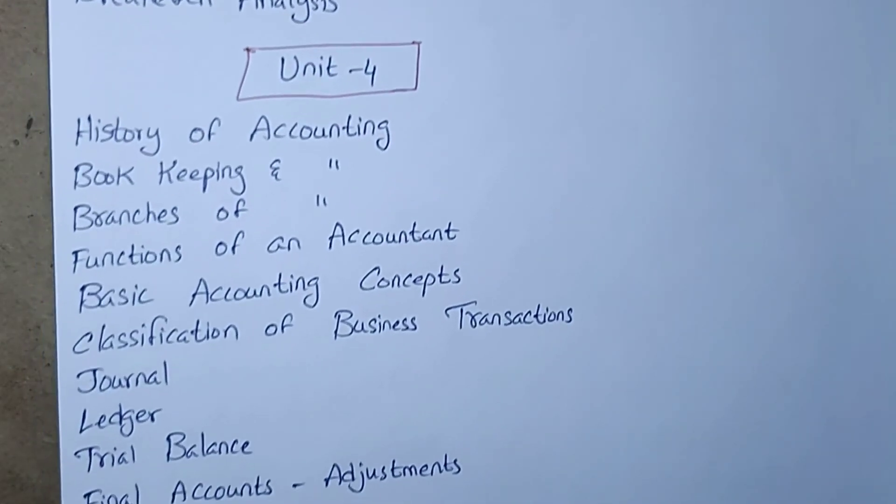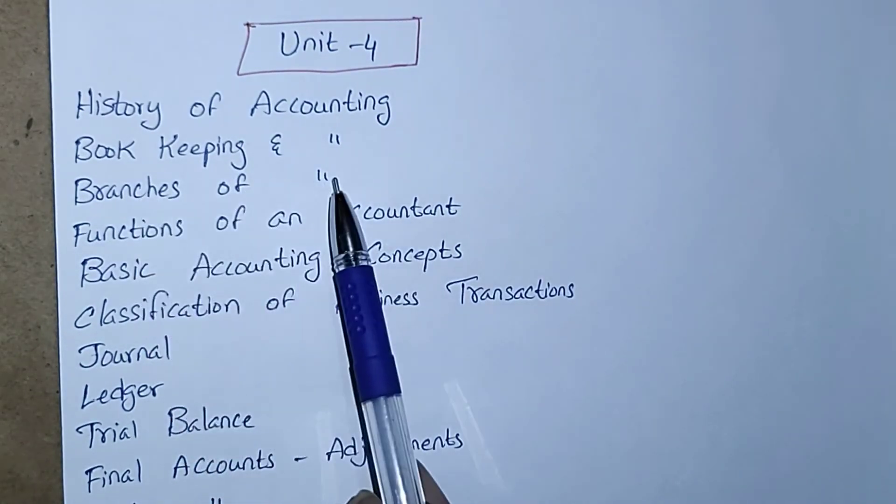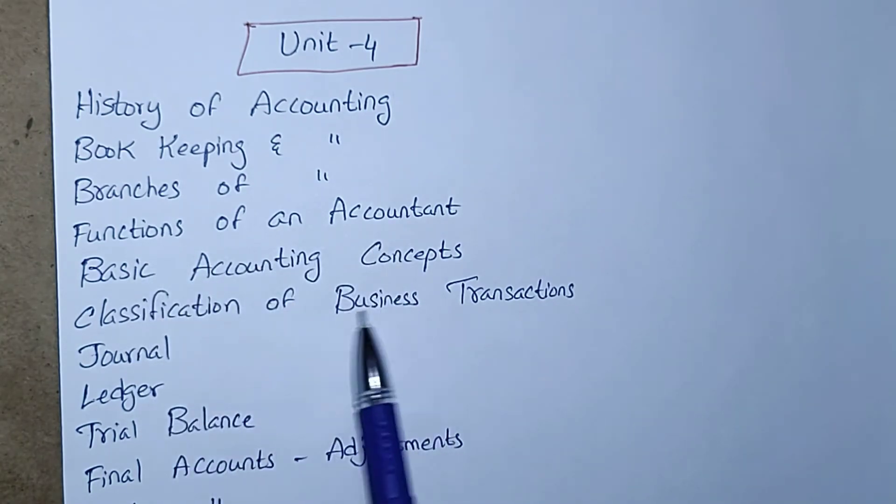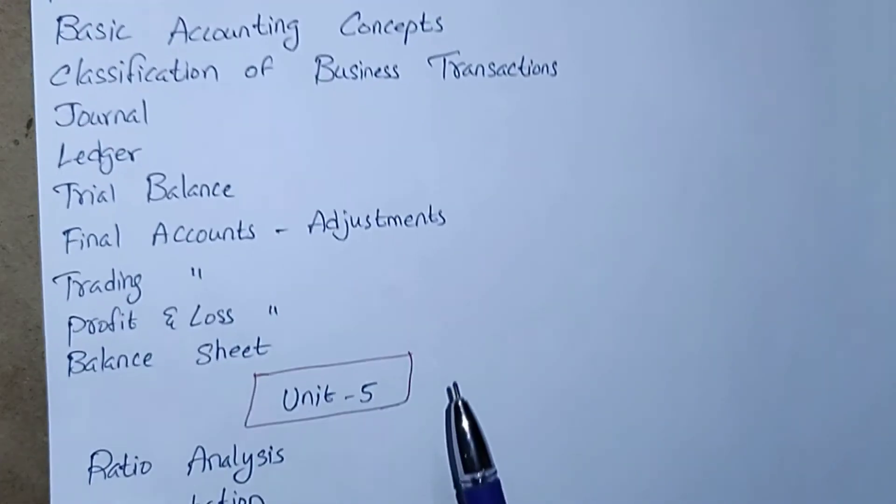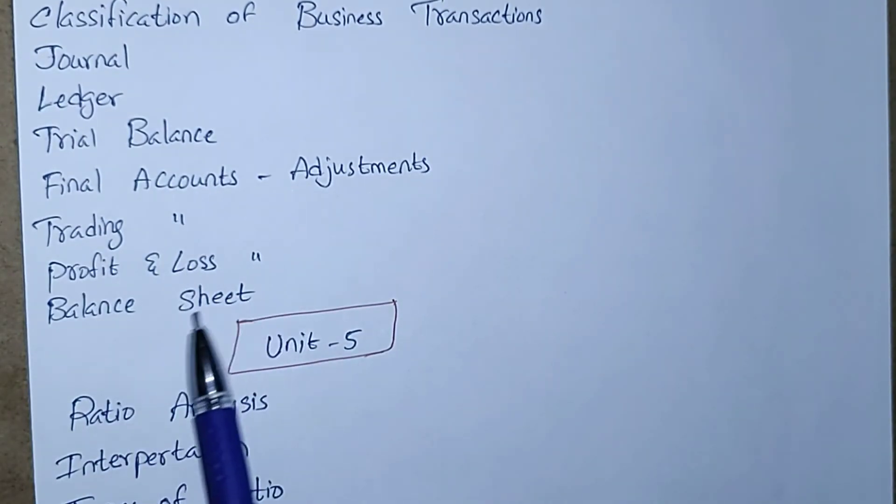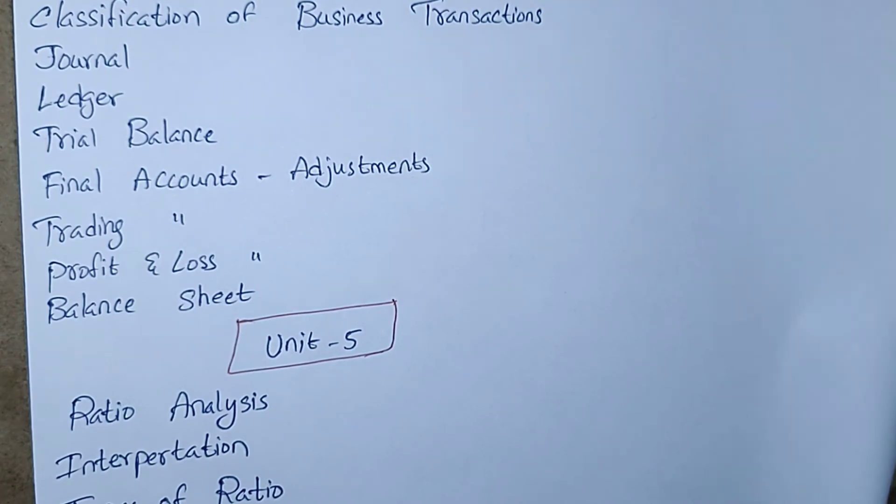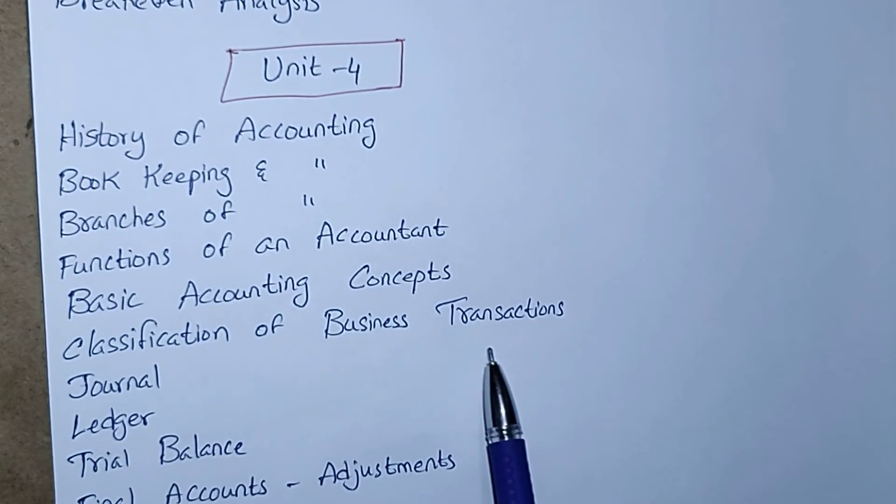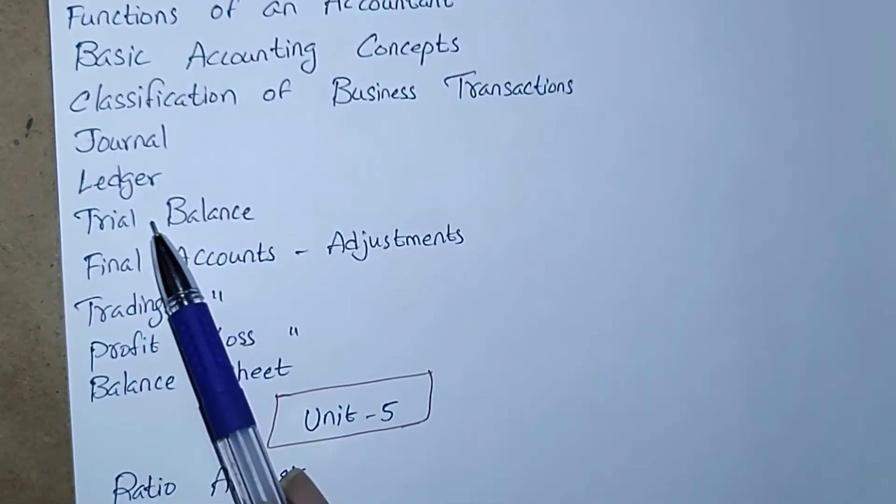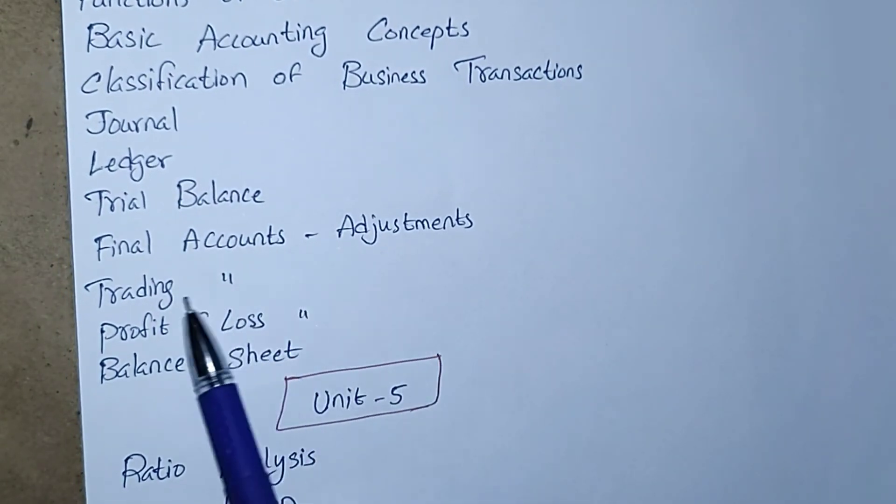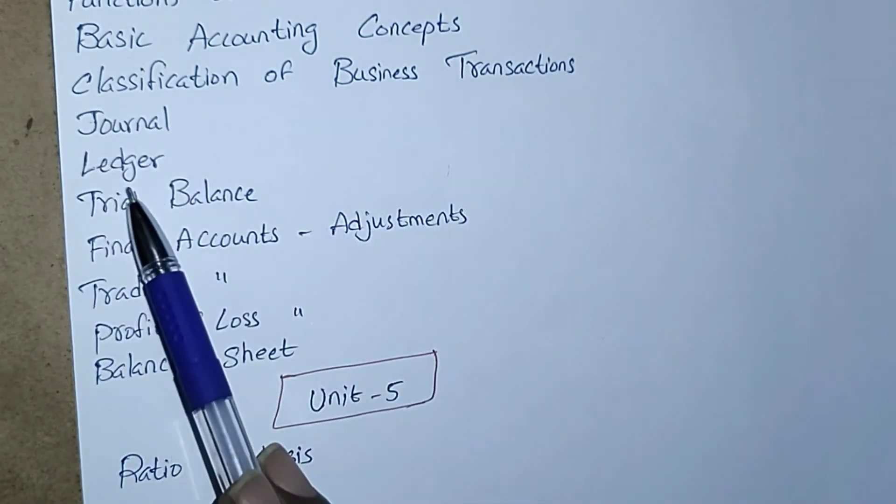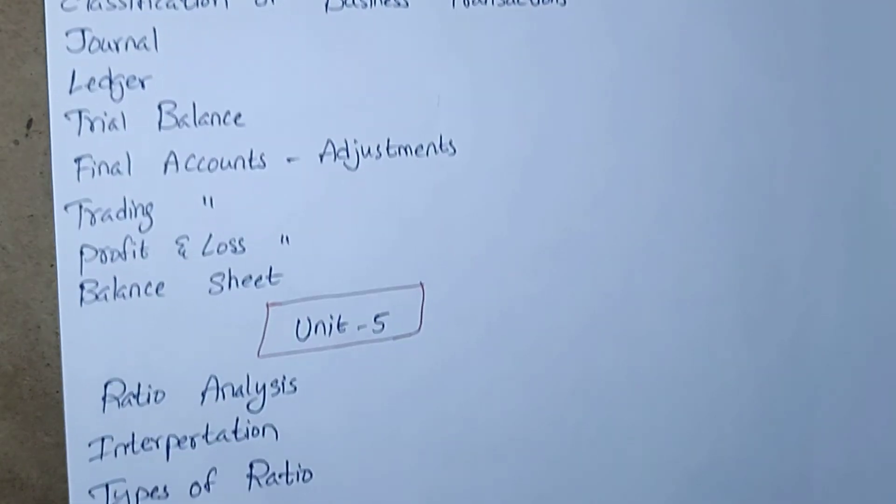Fourth unit, you can see this: history of accounting, bookkeeping and accounting, branches of accounting, functions of an accountant, basic accounting concepts, classification of business transactions, journal, ledger, trial balance, final accounts and adjustments, trading account, profit and loss account, and balance sheet. This is your fourth unit. You may get some theory questions on classification of journal and business transactions. From journal, ledger, trial balance, final accounts, adjustments, trading account, profit and loss account, and balance sheet, you will definitely get a direct full 15 marks question.